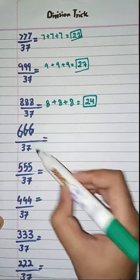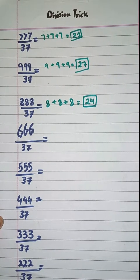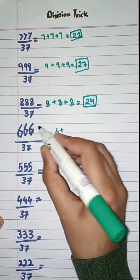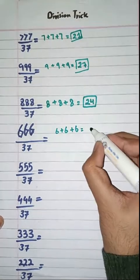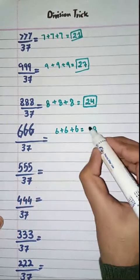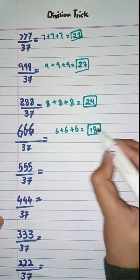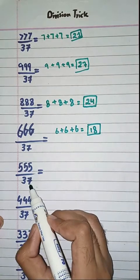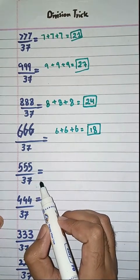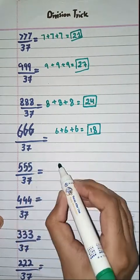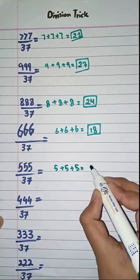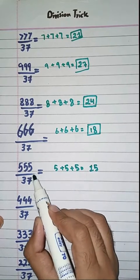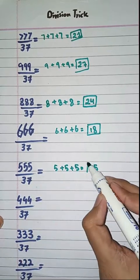Next one: we have to divide 666 by 37. Next, 555 divided by 37 — what we have to do? Simply add the digits of this number: 5 plus 5 plus 5, which is equal to 15. So 555 divided by 37 is equal to 15.